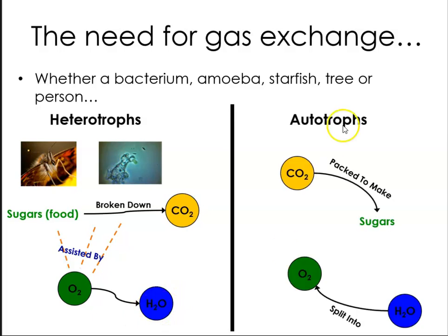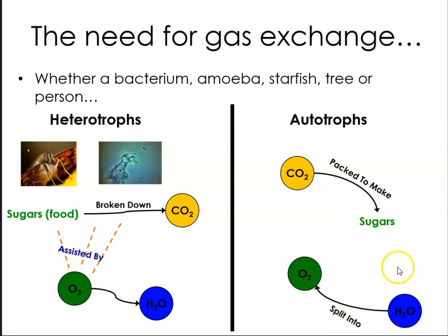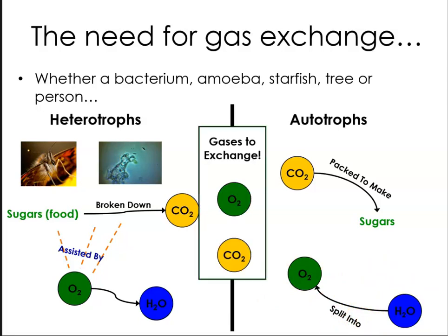On the other hand, we have autotrophs. Autotrophs are able to make their own carbon sources. They use carbon dioxide, which is then used to make sugars. With this process, water (H₂O) is split into oxygen. So we can see that both heterotrophs and autotrophs heavily rely on gas exchange for assistance with metabolism.